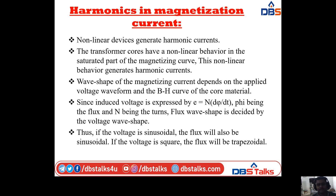The harmonic currents are generated by non-linear devices. The transformer has a non-linear behavior in the saturated part of the magnetizing curve. This non-linear behavior generates harmonic currents. The wave shape of the magnetizing current depends on the applied voltage waveform and the BH curve of the core material.